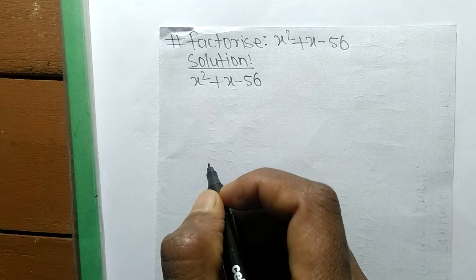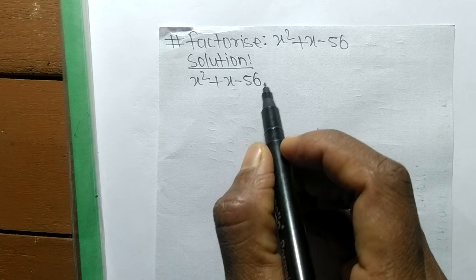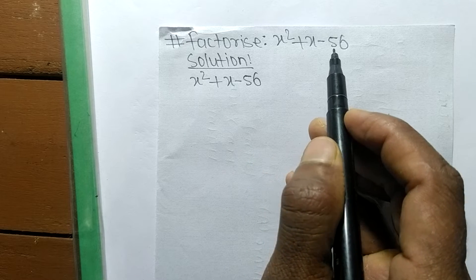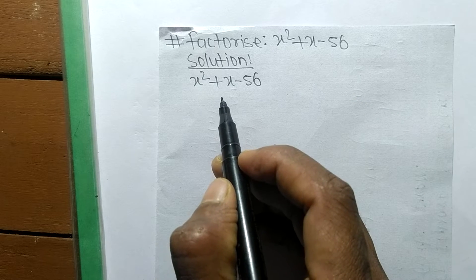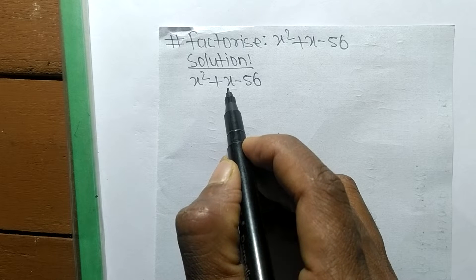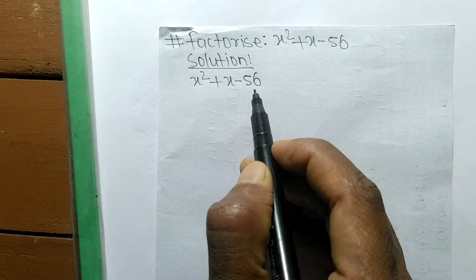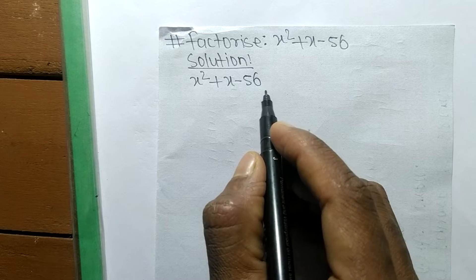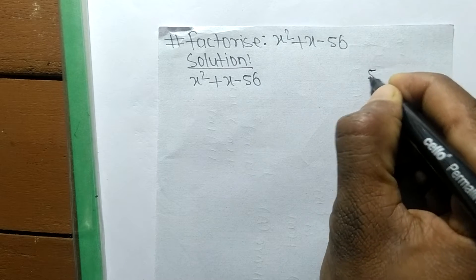Today in this video we shall learn to factorize x squared plus x minus 56. For the solution, first we have to find out the prime factors of 56.